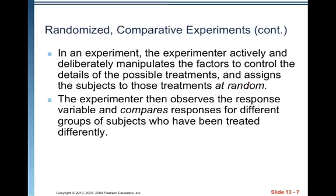In an experiment, the experimenter actively and deliberately manipulates the factors to control the details of the possible treatments, and assigns subjects to those treatments at random. If either one of those two characteristics is missing — if there is no deliberate manipulation of the factors, or if there is no random assignment of subjects to treatments — then you do not have an experiment.